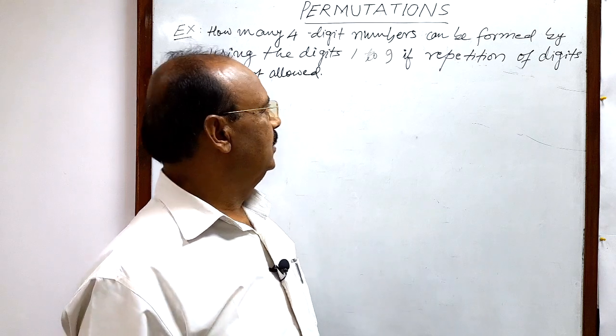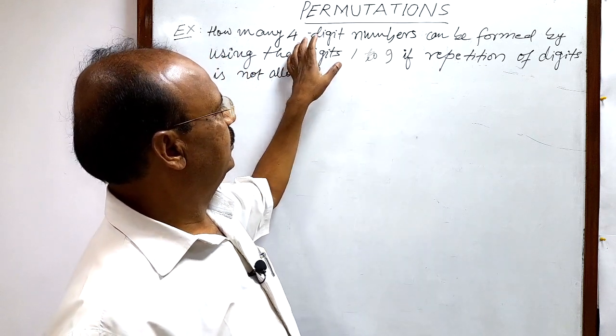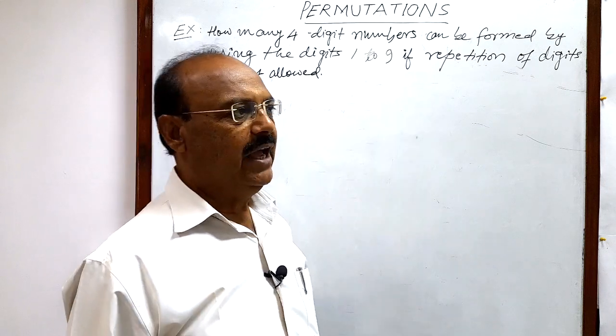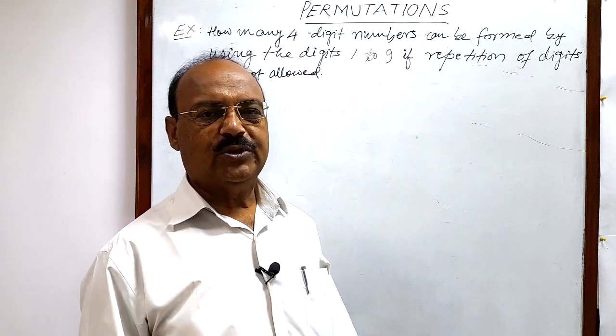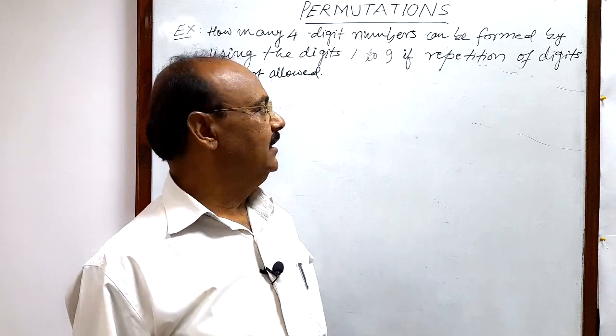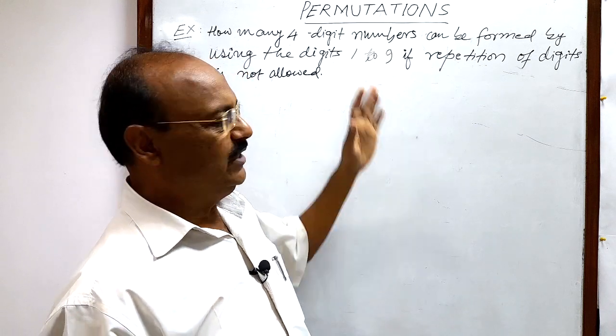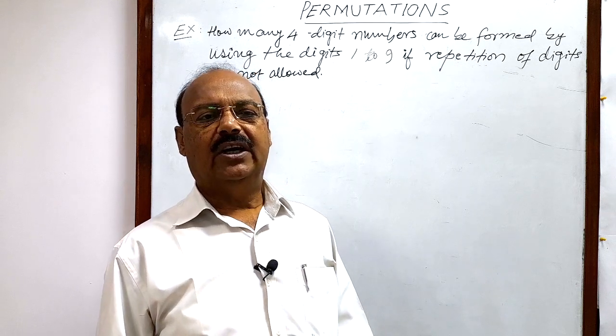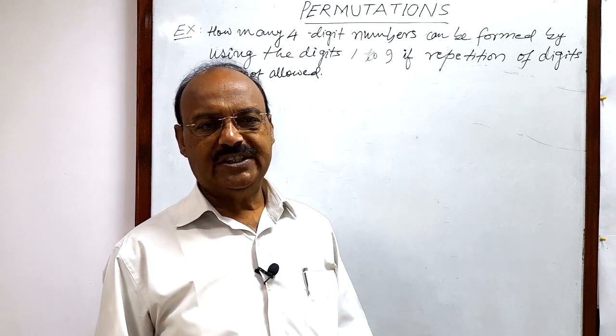It means that we have to select four digits out of these nine digits and we have to make all the possible arrangements of these four digits in different order so that we could get all the possible four-digit numbers.